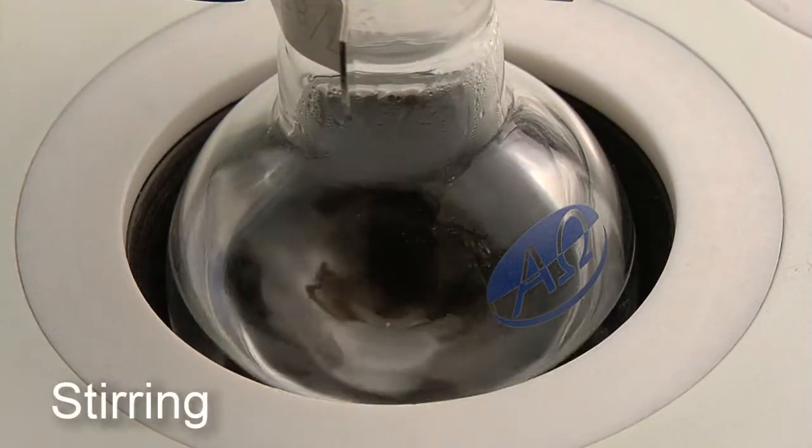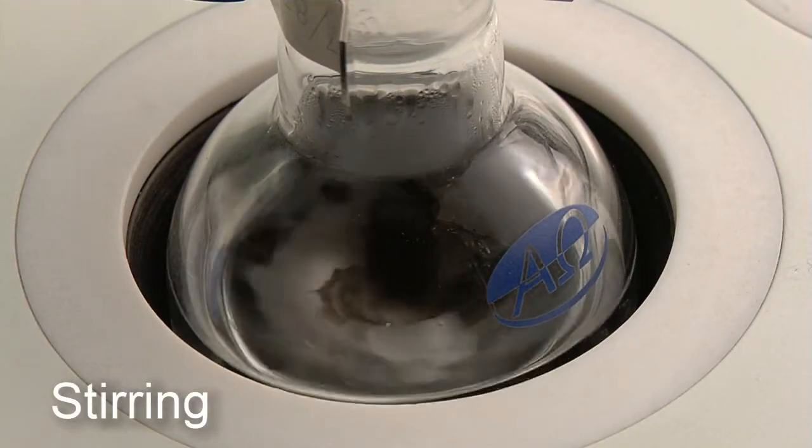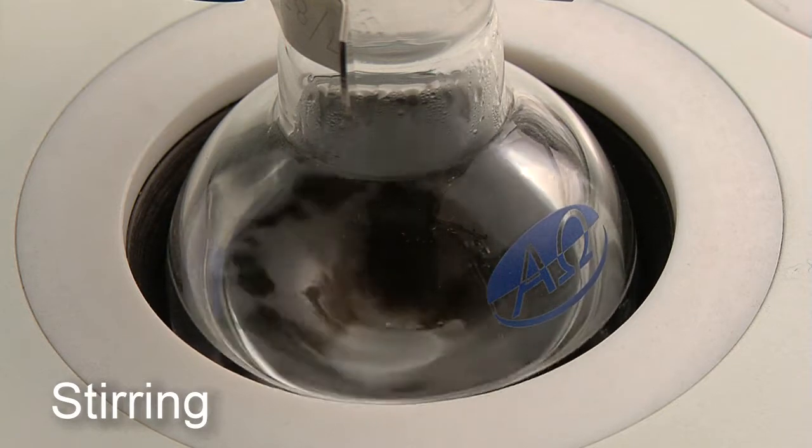Pro7 stirs the mixture evenly with a magnetic stirrer. The stirring speed ranges from zero to 1500 RPM.